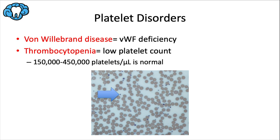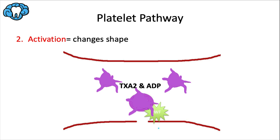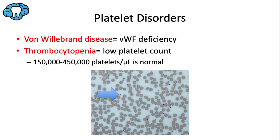Von Willebrand disease causes a deficiency in von Willebrand factor, affecting the ability of platelets to adhere to the vessel wall. It's the most common congenital bleeding disorder, affecting about one percent of the population. Without von Willebrand factor, that initial step of adhesion cannot happen. Importantly, von Willebrand factor also acts as a carrier for coagulation factor 8, so this condition affects both platelets and coagulation — we'll see it again soon.